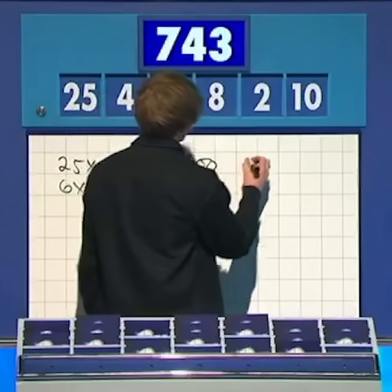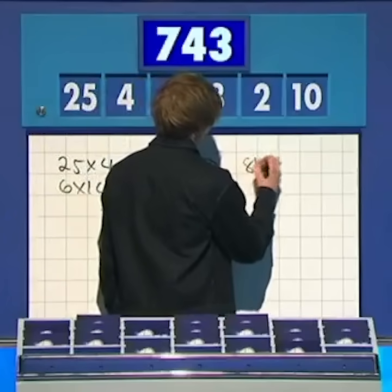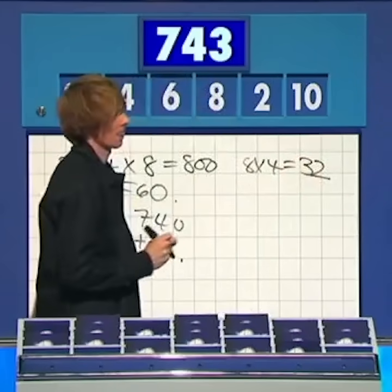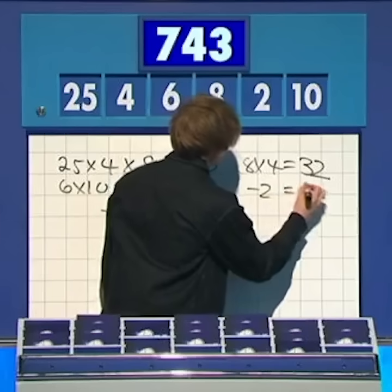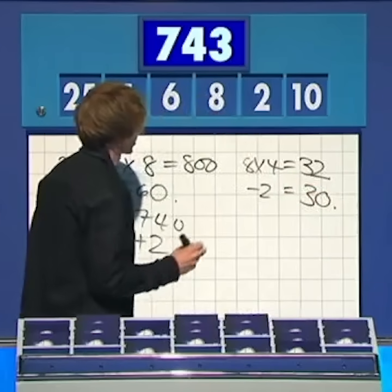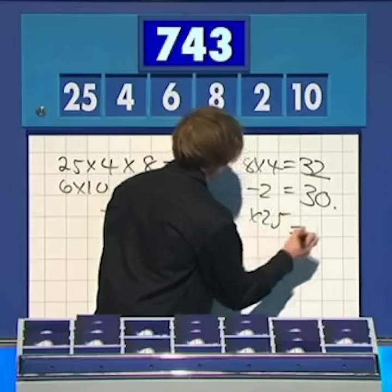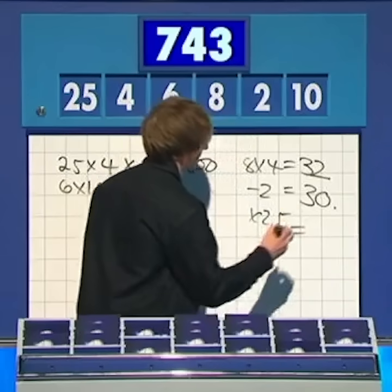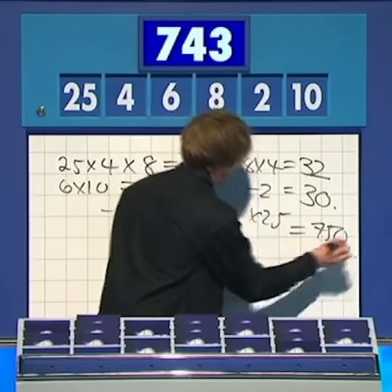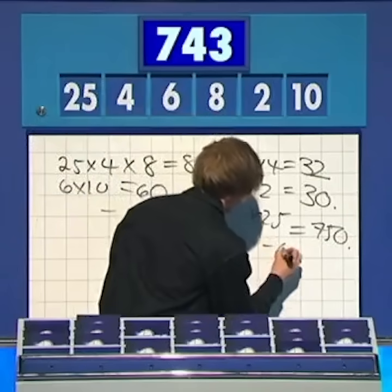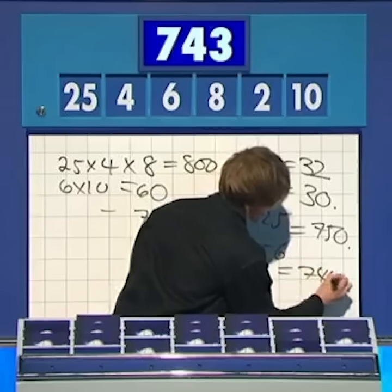So solve for 744. 8 times 4 is 32. Take 2 off — that gives you 30. Multiply by 25; times 25 is going to give you a big old number. And then take away 6, which is going to give you 744.